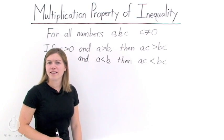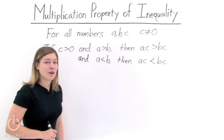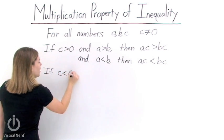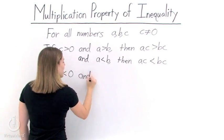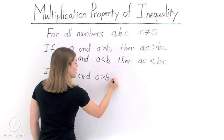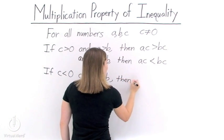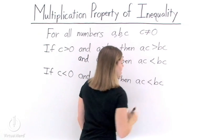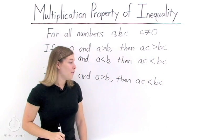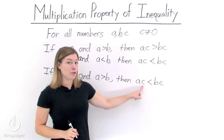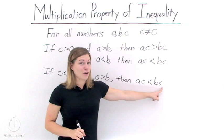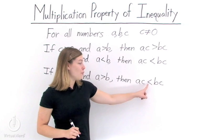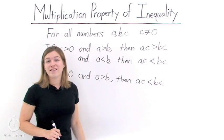But what about when c is a negative number? In other words, what if c is less than 0? Well, if c is less than 0 and a is greater than b, then a times c will be less than b times c. So if we multiply by c on both the left and right-hand sides of our inequality, in order to preserve the inequality, we must flip over our inequality symbol when c is negative.